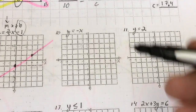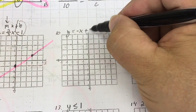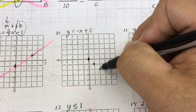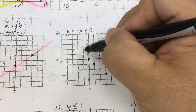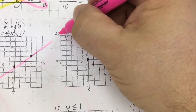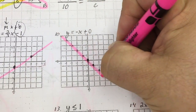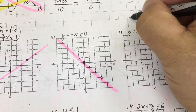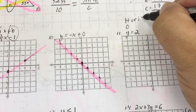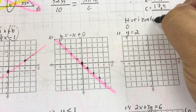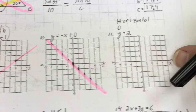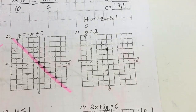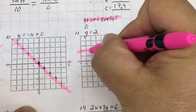Y equals negative x — that's plus 0, so it goes through the origin. It goes down 1 over 1, following the pattern on the other side. Y equals 2 — this is a HOY, a horizontal line through y equals 2.